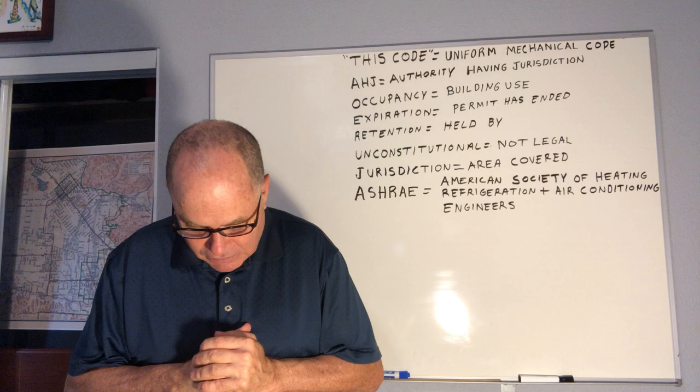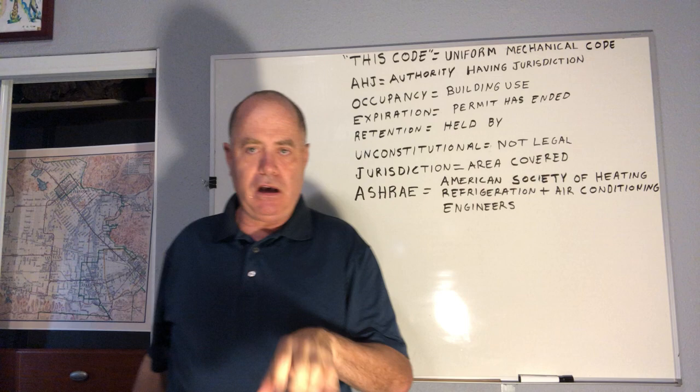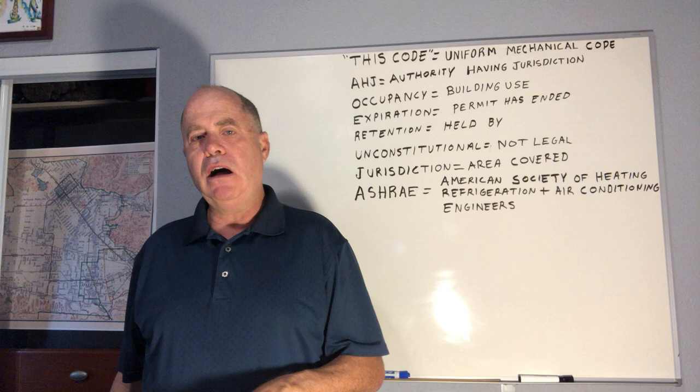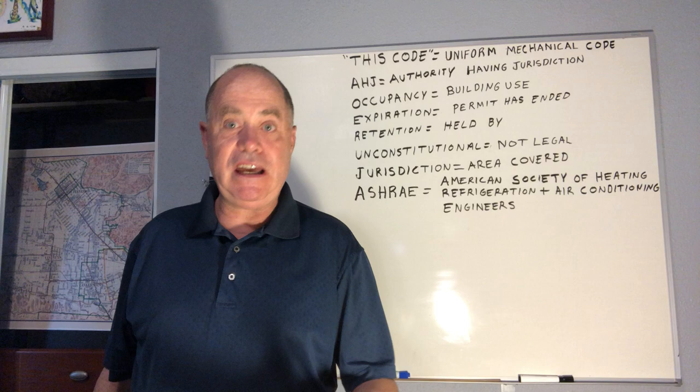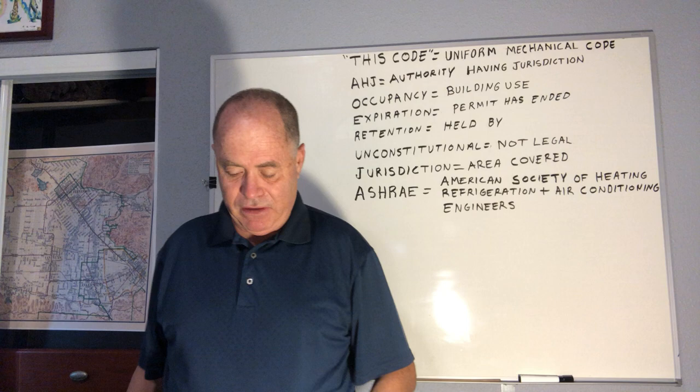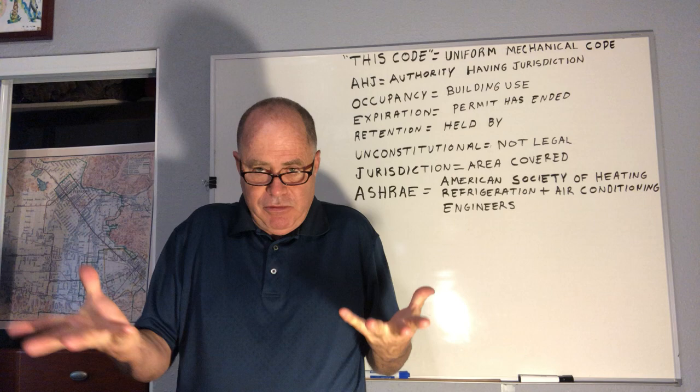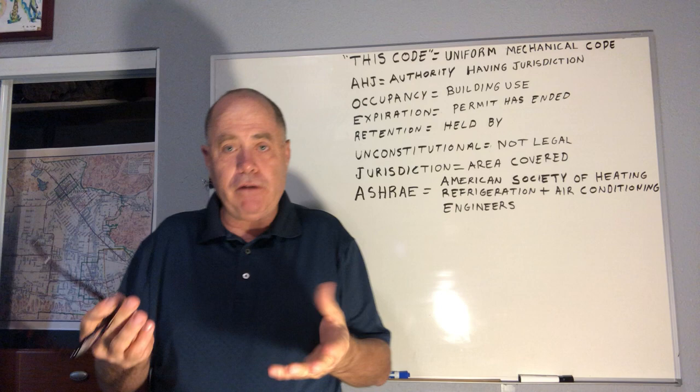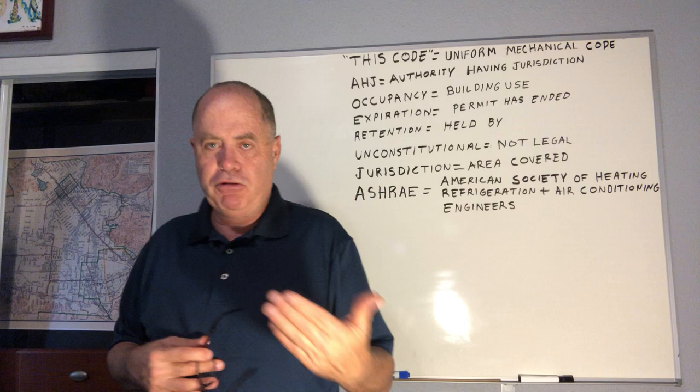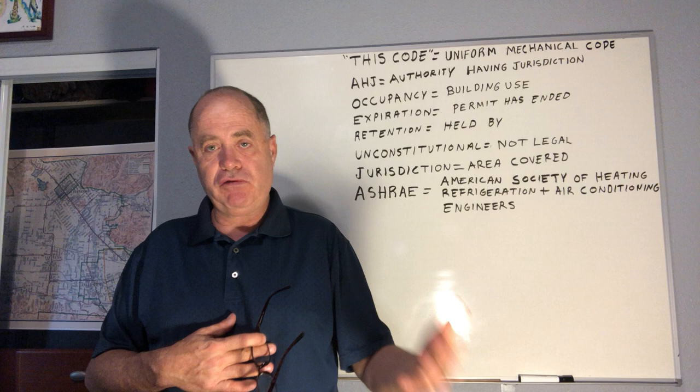Regarding unconstitutionality — if part of the code is proven to be unconstitutional or illegal, it doesn't make the whole code invalid. They actually write that protection into the code itself. And when there are conflicts between codes — two different statements that contradict — the rule is that the stricter, more stringent one takes precedent. All tie-breakers go to the more difficult, safer law or code.